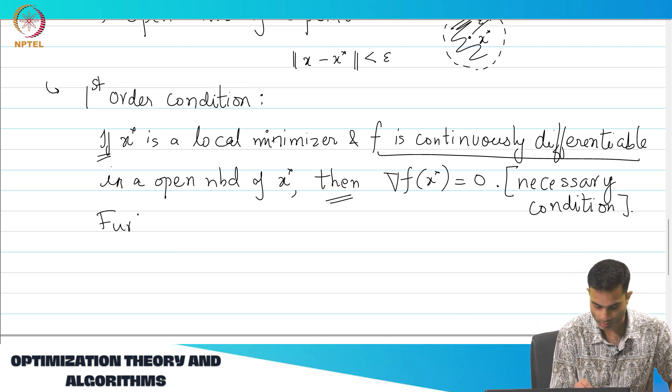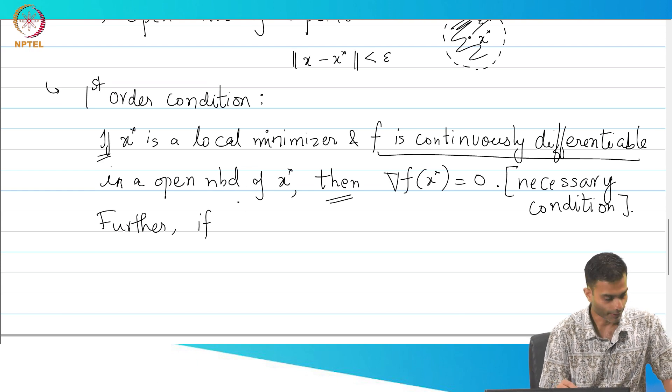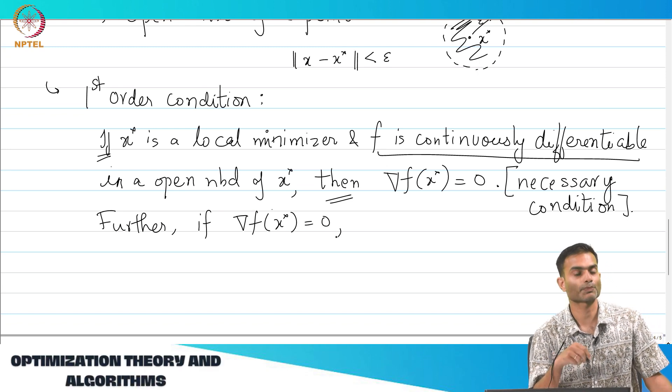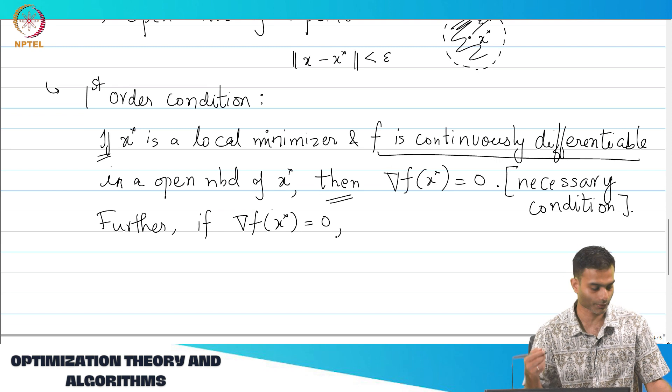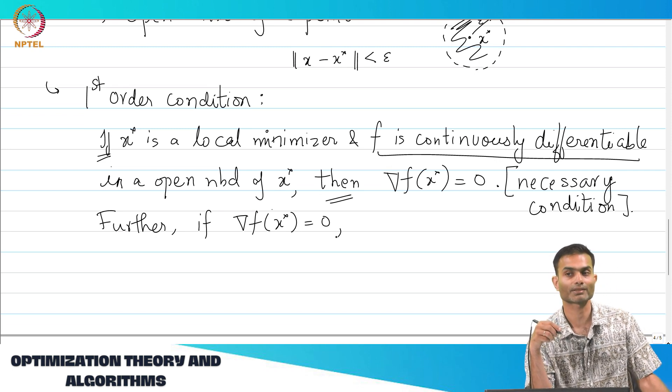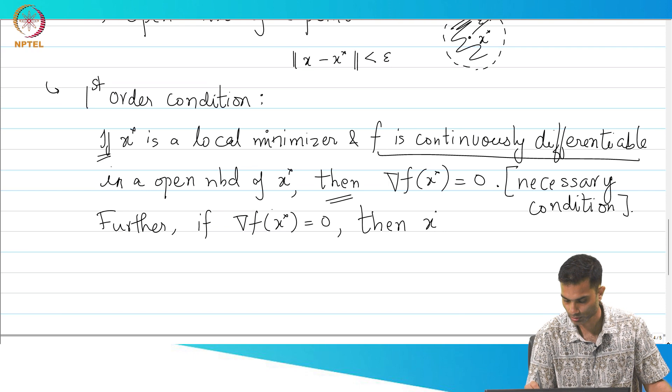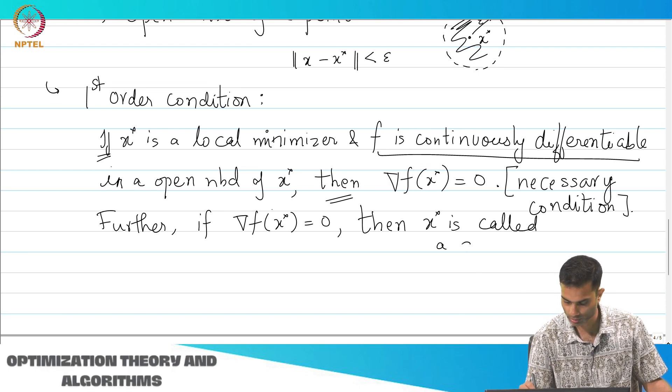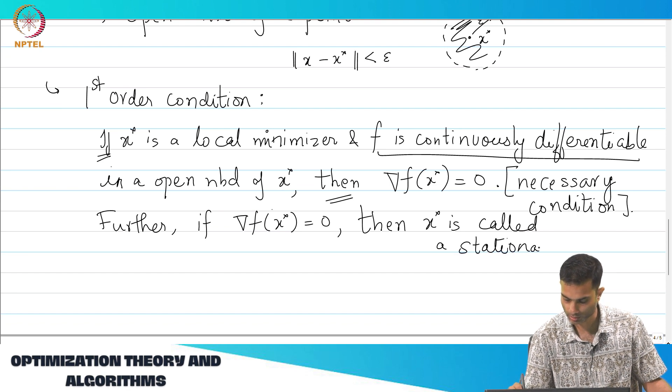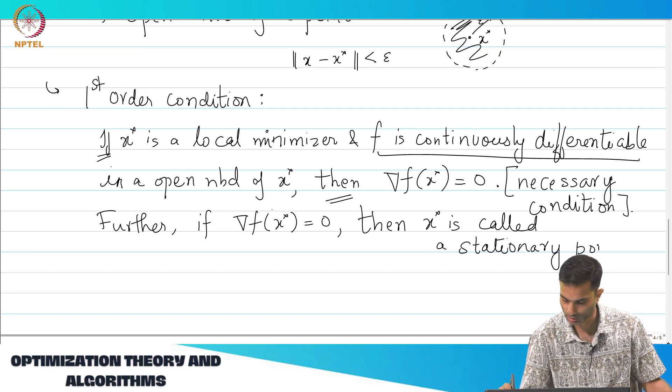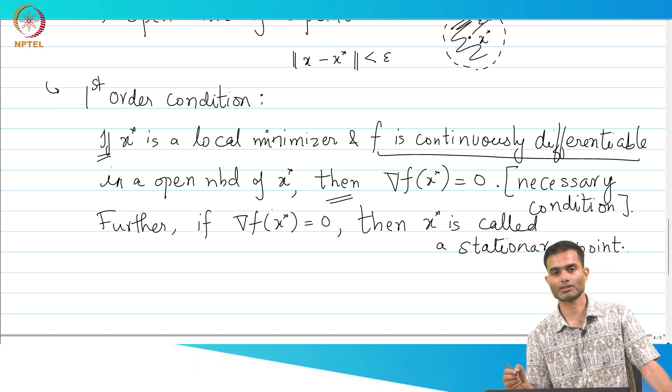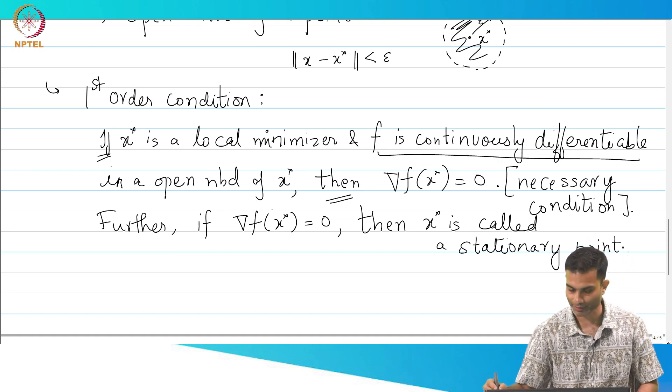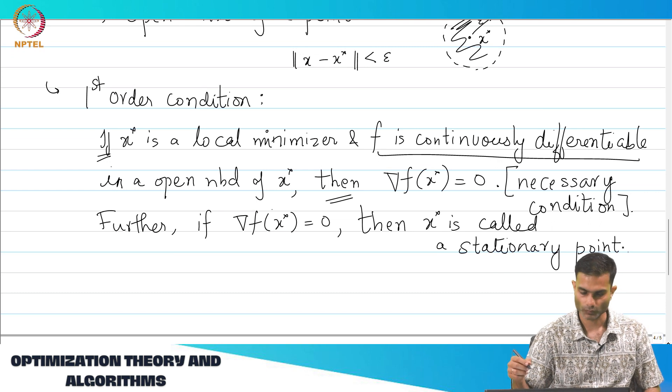Further, if this holds true, then there is a special word, another special word reserved for x*, it is called a stationary point. I am just, the only reason I am mentioning this is because some books will call it a stationary point. So, you should just know that there are various words by which people refer to it. So, that this is quite straightforward.